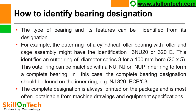The type of bearing and its features can be identified from its designation. For example, the outer ring of a cylindrical roller bearing might have the identification 3NU20 or 320E, identifying an outer ring of diameter series 3 for a 100 mm bore (20 × 5). This outer ring can be matched with NU, NJ, or NUP inner rings. The complete bearing designation, such as NJ320ECP-C3, should be found on the inner ring and is always printed on the package.